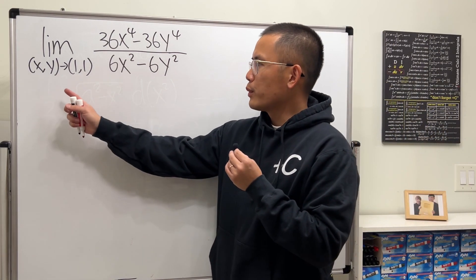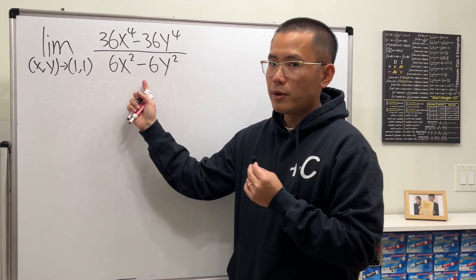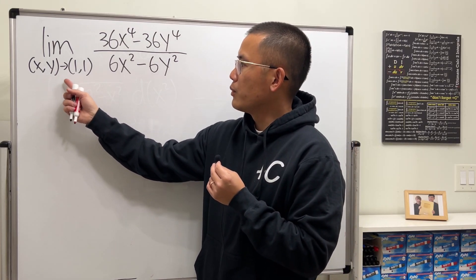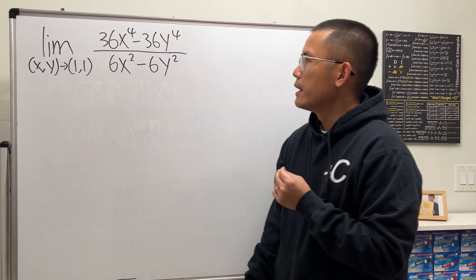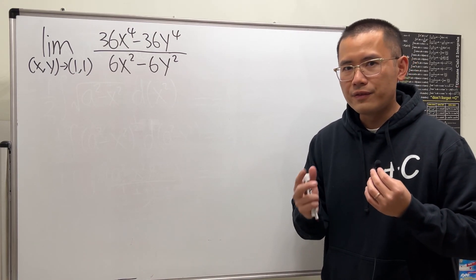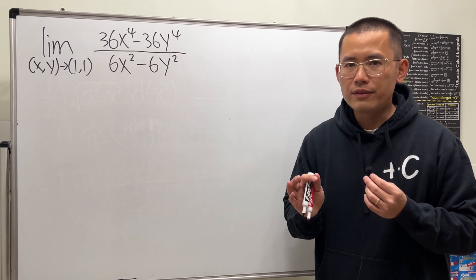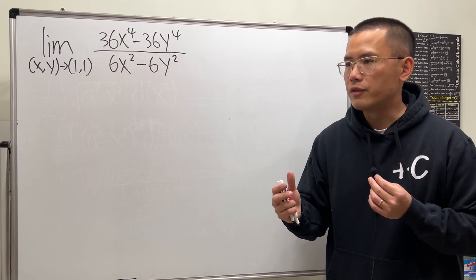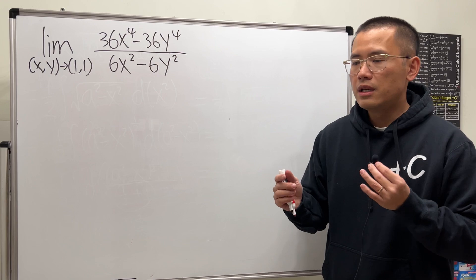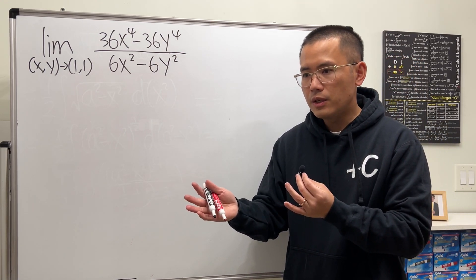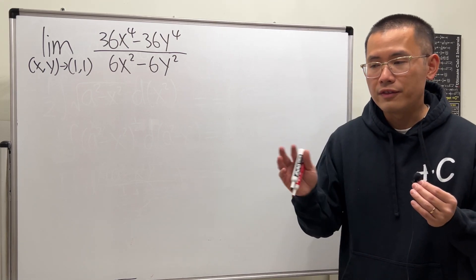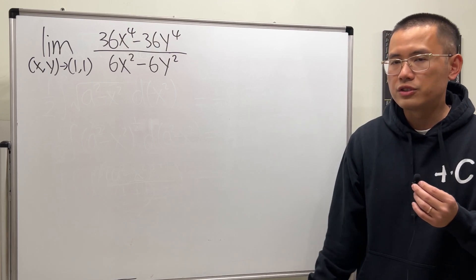First, we are trying to evaluate a limit of a multivariable function, and we have (x, y) approaching (1, 1). For this right here, in fact, I have a video on the ways that you have to know how to get the answer of a multivariable limit. It's either you get a value for the limit or you show the limit doesn't exist. I have a video for both of them, so go ahead and check that out.